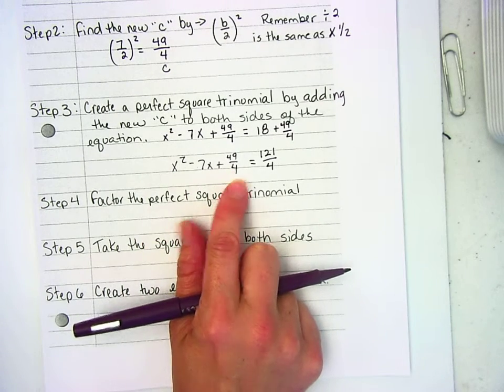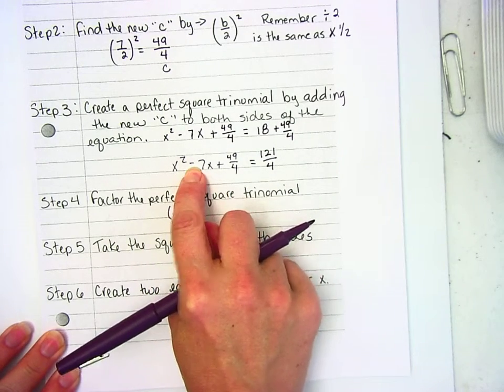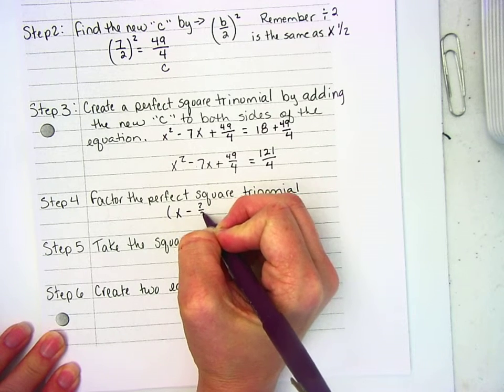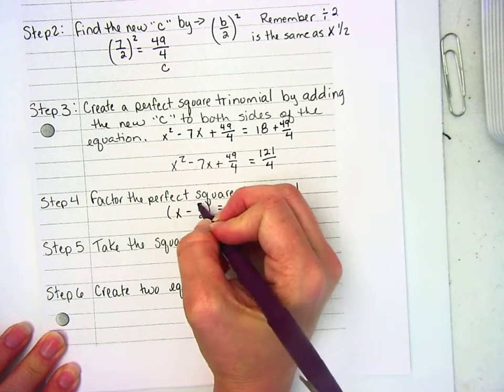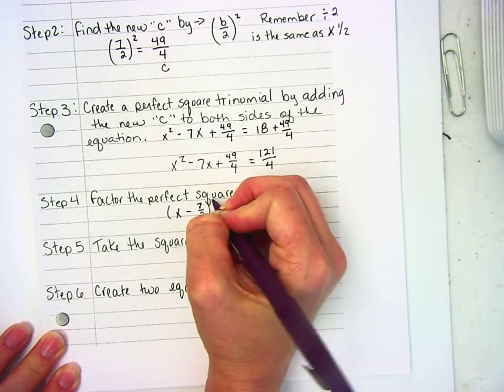7/2, 7/2. So there's my terms. X, use your subtraction since it's minus there. (x - 7/2)² = 121/4. And that's squared.